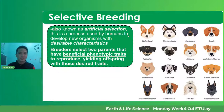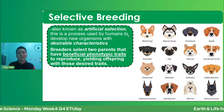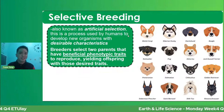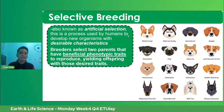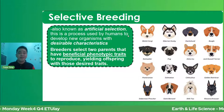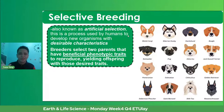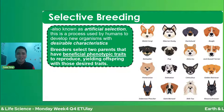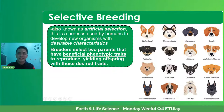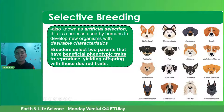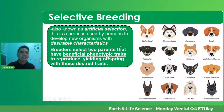The first technique is called selective breeding. From the word itself, you select a particular trait — a desirable trait — and you breed those organisms. One of the best examples in the animal kingdom is dogs. We have different kinds of dogs. Paano nga ba nagkaroon ng different breeds ng dogs? Yan ay produkto ng tinatawag nating selective breeding.